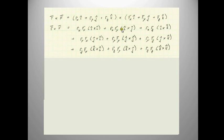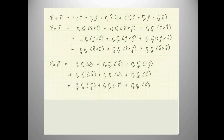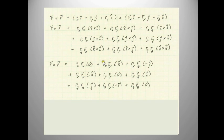Now we're left with nine components of this product. You need to evaluate all the respective cross products. What you find is that I cross I, J cross J, and K cross K equals zero — because if you have two vectors that are parallel to each other there is no cross product. The vectors are parallel, they don't cross each other, so there's no ability to cross one vector into the other, and they end up producing zero — no direction is produced.